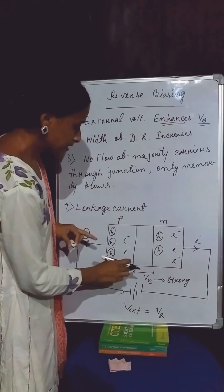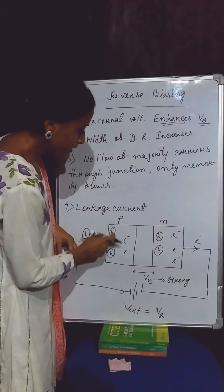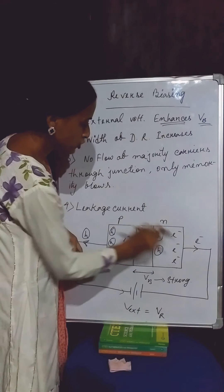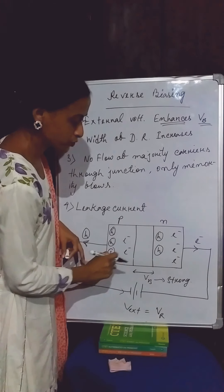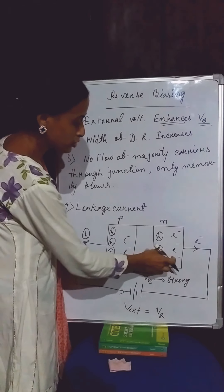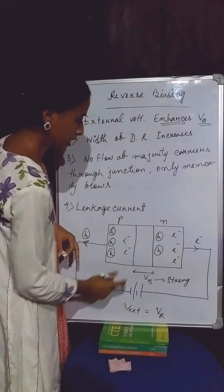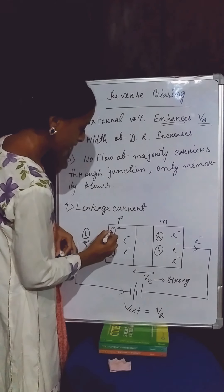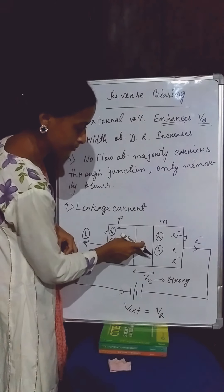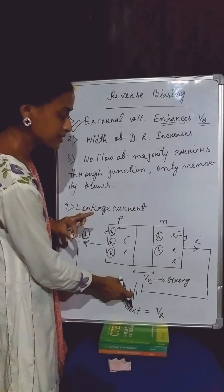In this case, there is no flow of majority carriers through the junction. All the majority carriers of the P-section as well as the N-section are pulled away from the junction area by the externally applied voltage. So that is the first step.